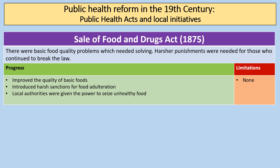The Sale of Food and Drugs Act of 1875 addressed the basic food quality problems of adulteration. Progress included improved food quality, harsh sanctions for food adulteration, and local authorities being given the power to seize unhealthy food. Combined with the invention of the tin can — allowing food to be preserved — there were huge improvements in terms of what people were eating.